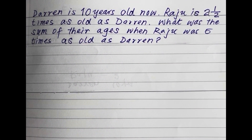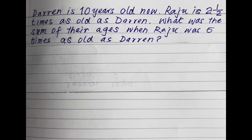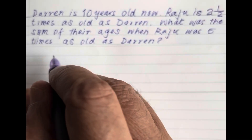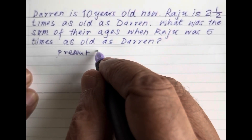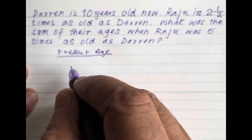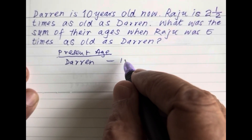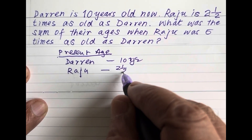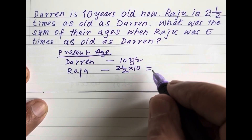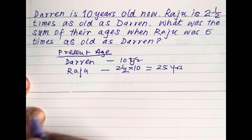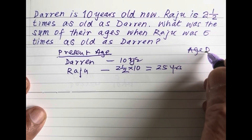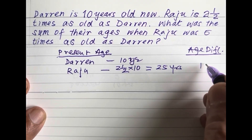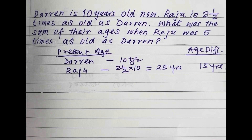Hello friends, welcome to Magic Maths by OPM. Please read the question carefully, and if need be, read it again. Let's examine the present age of Darren and Raju. Darren is 10 years old, so Raju is two and a half times 10 years, that is 25 years. So the difference of age between the two is 15 years.